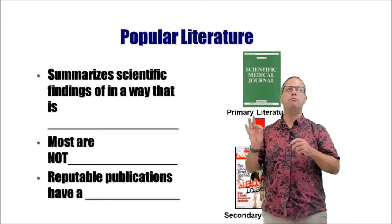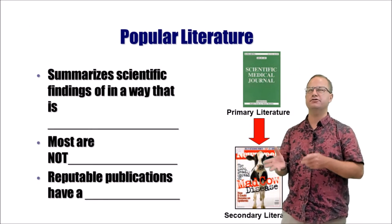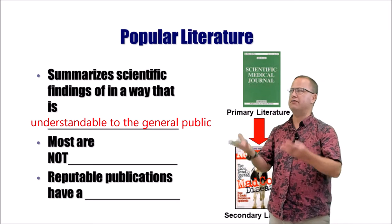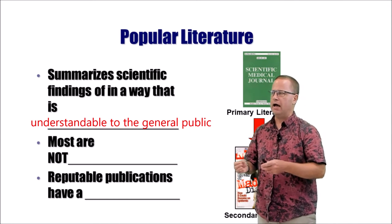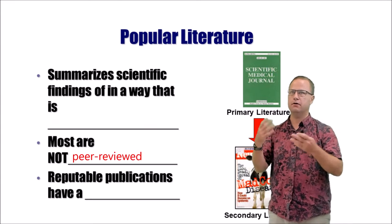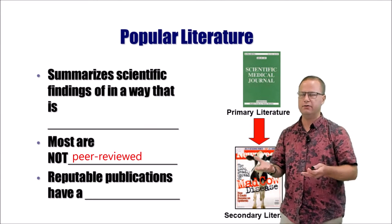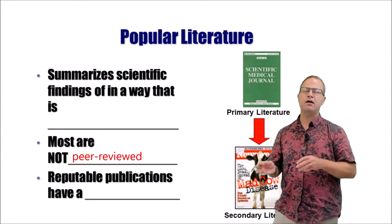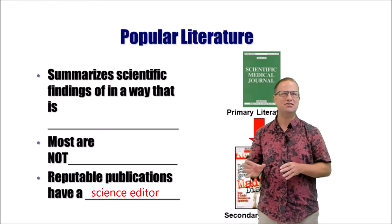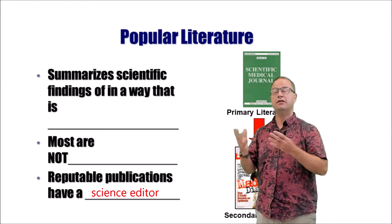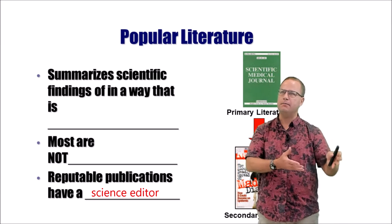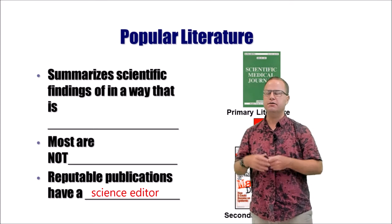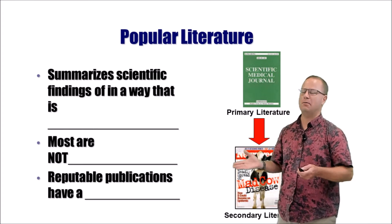There's also popular literature, which is probably another type of tertiary literature. It summarizes scientific findings in a way understandable to the everyday public. Most popular literature is not peer-reviewed, unlike primary literature. However, reputable publications like Newsweek will have a science editor or someone with a science background who scrutinizes articles. Good publications will even contact the scientists being written about to confirm accuracy. So there are reputable popular sources and non-reputable ones as well.